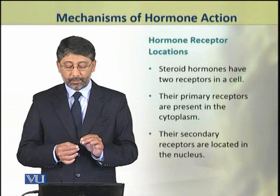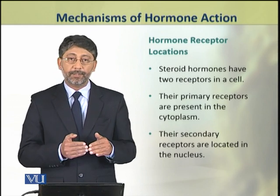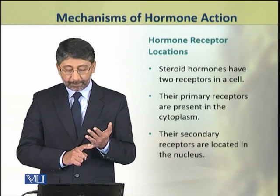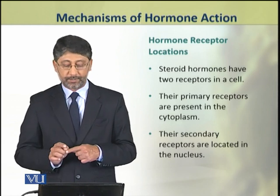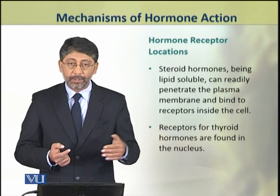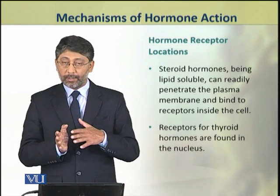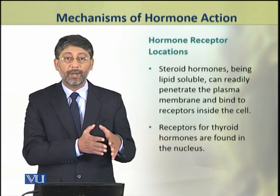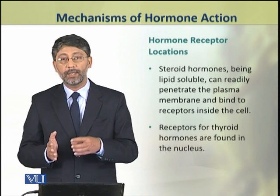The steroid hormones and lipid-soluble hormones can enter the cell, so their receptors are present inside the cell. Steroid hormones have two receptors in the cell: the primary receptors are present in the cytoplasm, while the secondary receptors are inside the nucleus. Being lipid-soluble, steroid hormones can easily enter the cytoplasm and bind to intracellular receptors. Lipid-insoluble hormones, by contrast, cannot enter the cell and are therefore constrained to bind at the plasma membrane, whereas steroid hormones can bind to cytoplasmic receptors.